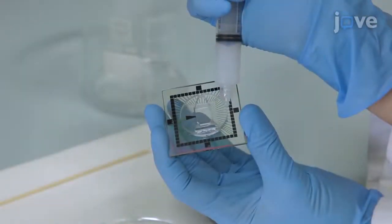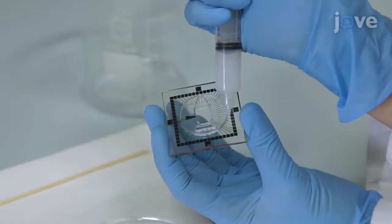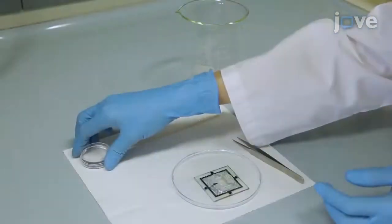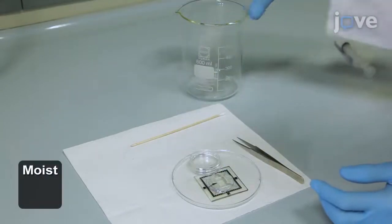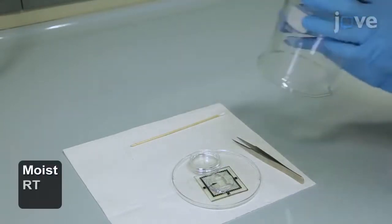Spread a sealant layer around the outer border of the recording chamber. Then place the MEA chamber assembly in a closed moist environment and let it cure at room temperature overnight.